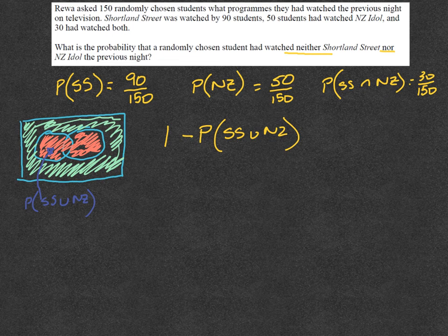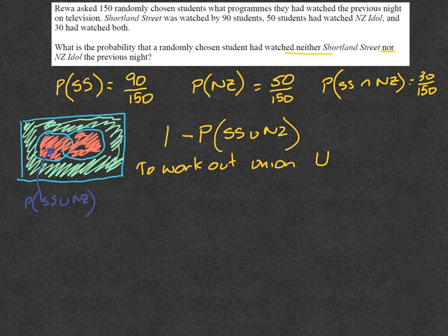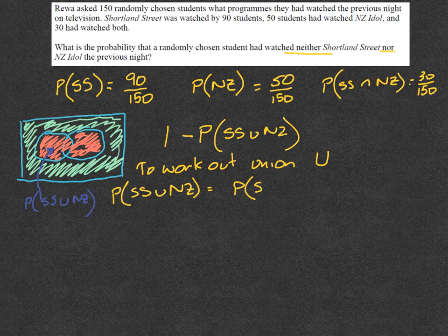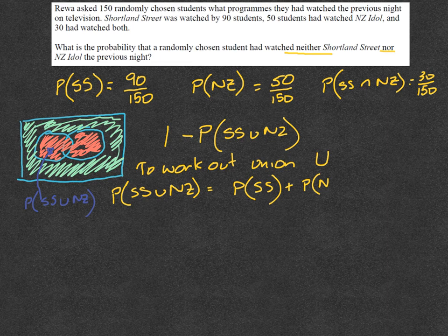Now to work out the Union, there is a formula. So the probability of SS union NZ in this case is going to equal the probability of those that watched Shortland Street plus the probability of those that watched New Zealand Idol minus their intersection.